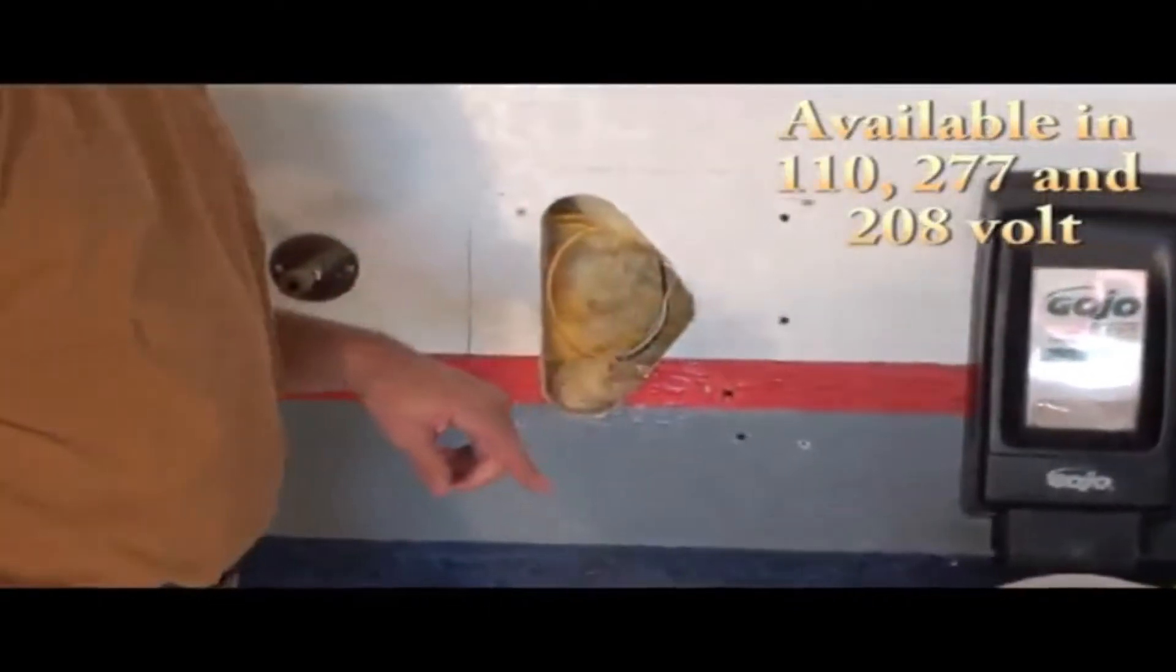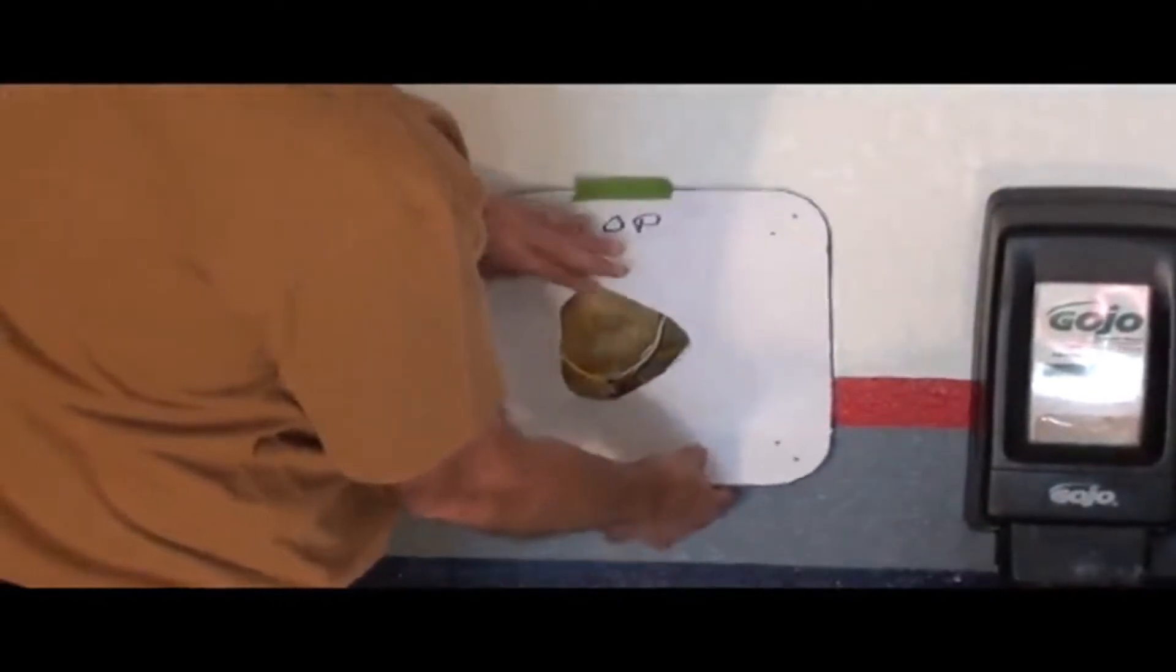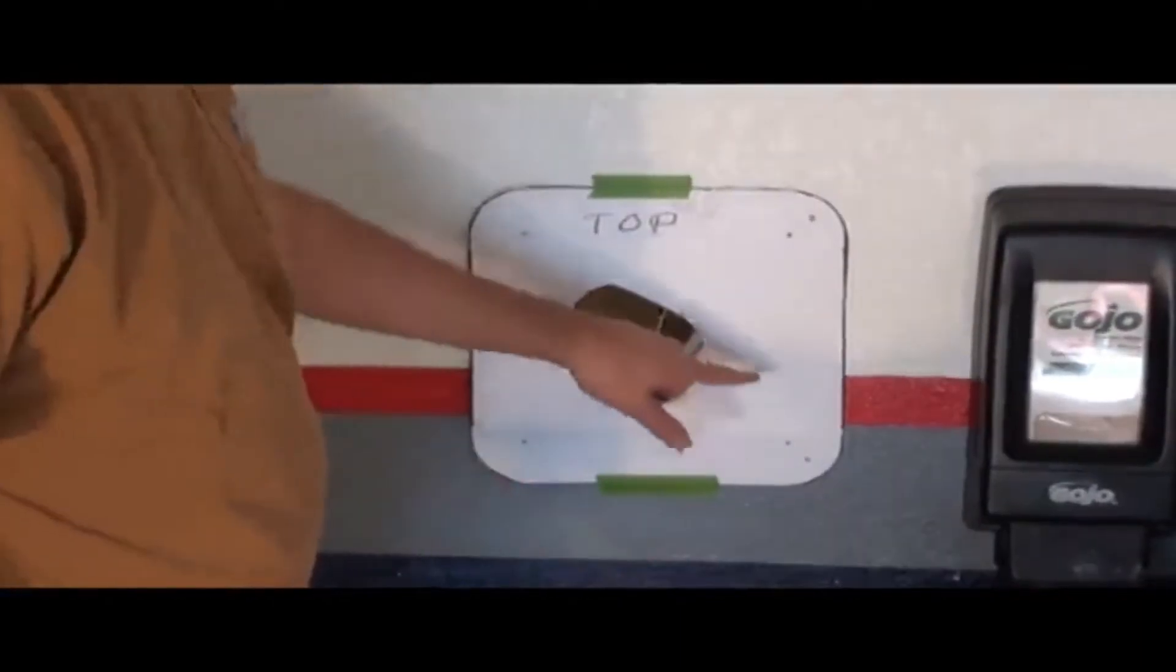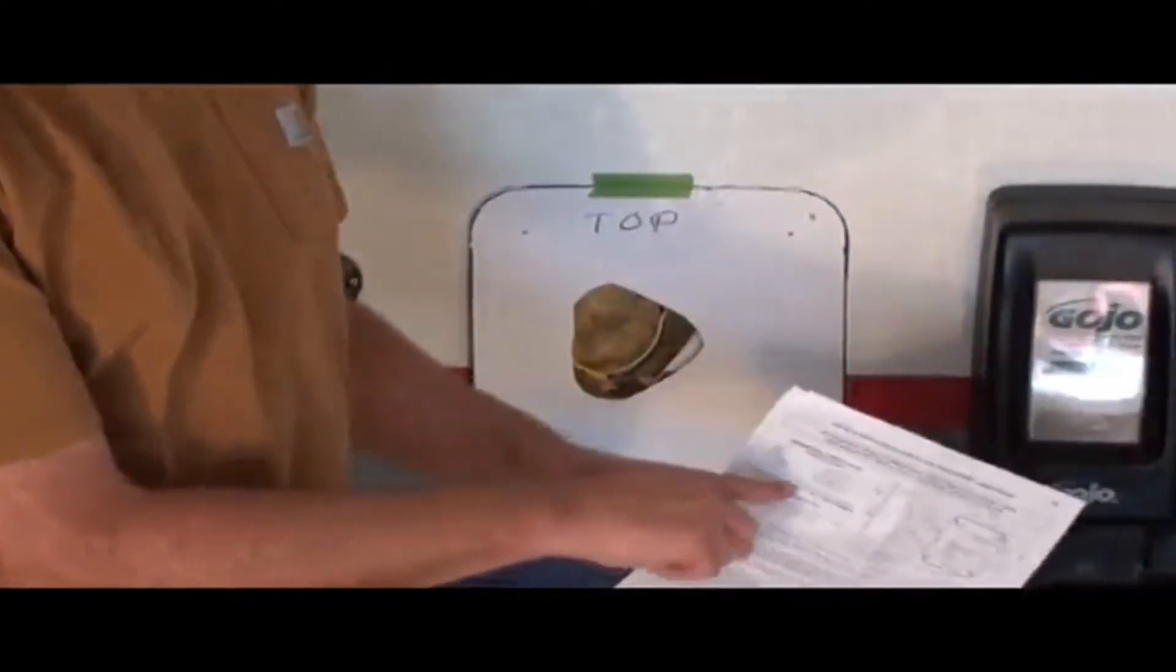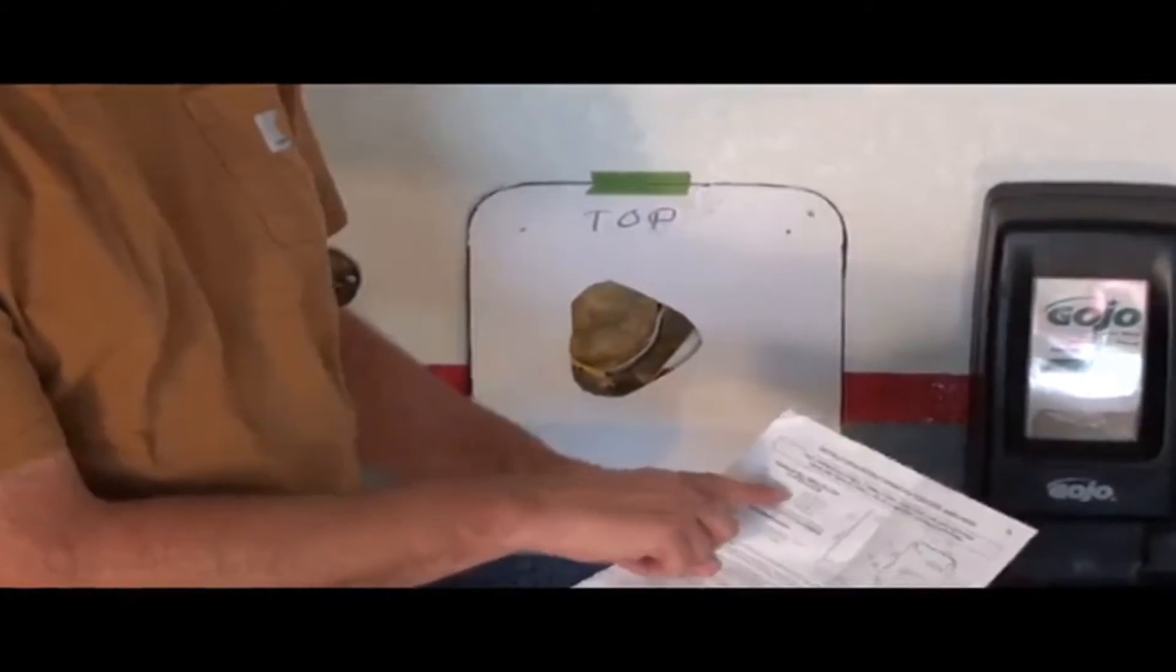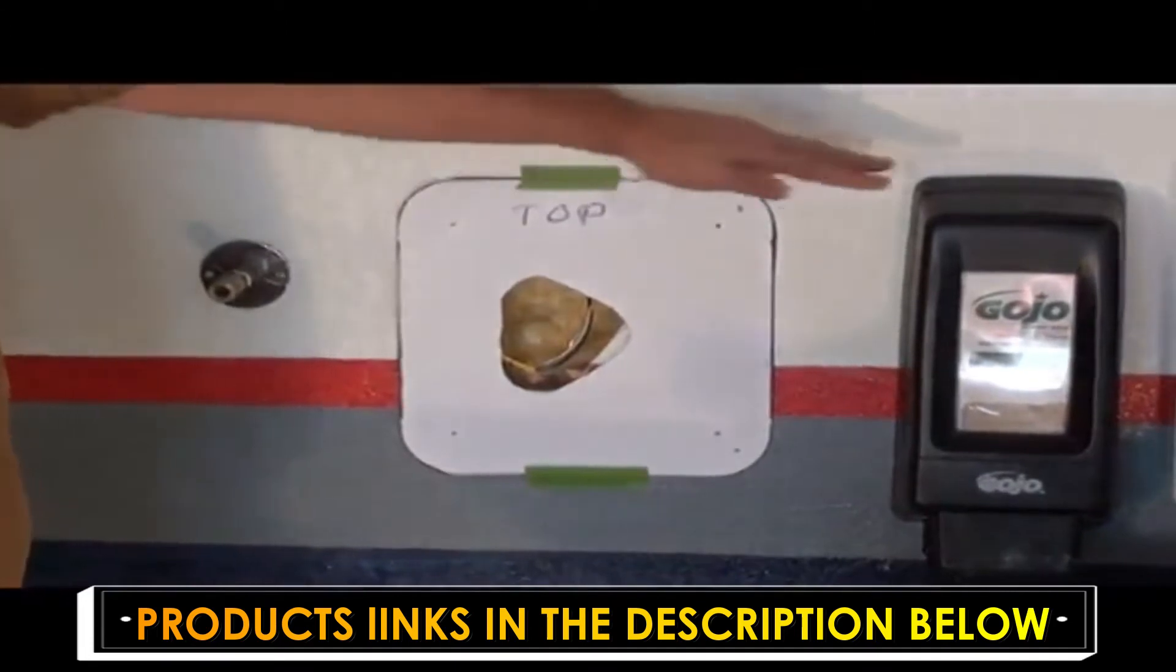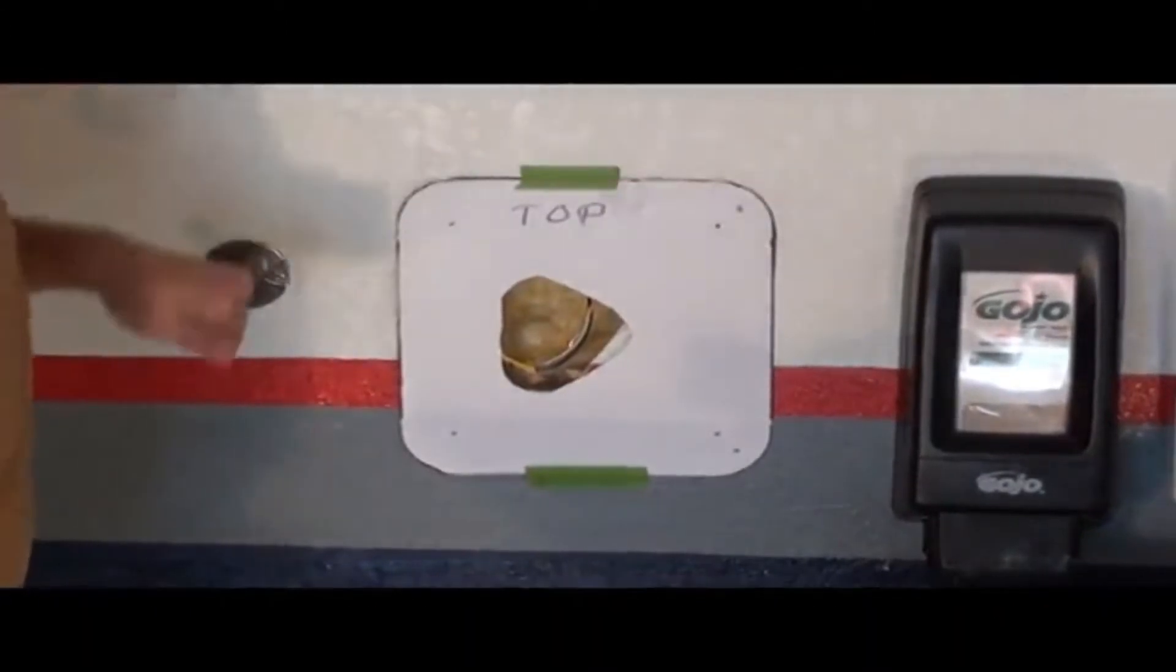The unit takes 110. So using a level, I put the template up there. Drilled my holes. The instructions recommend certain heights based on who's going to use it. Men should be 45 inches off the floor. Ladies, 43. I set mine at about 43 to match the height of my other dispensers here.